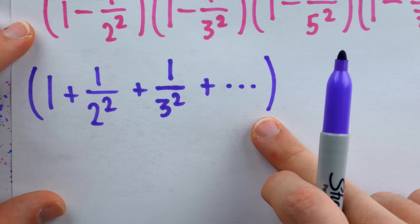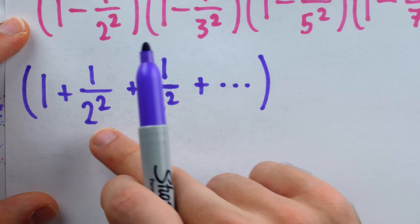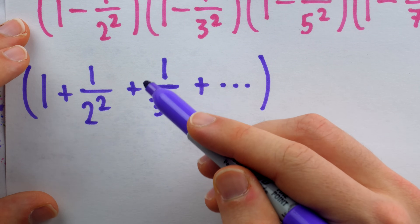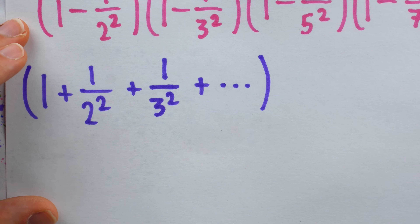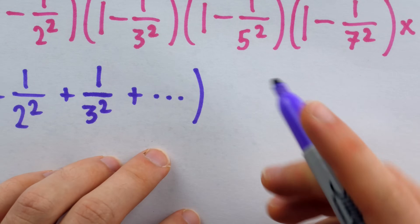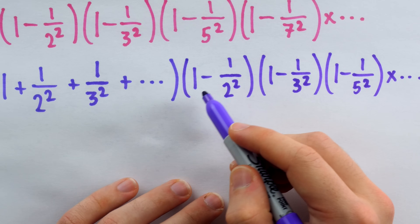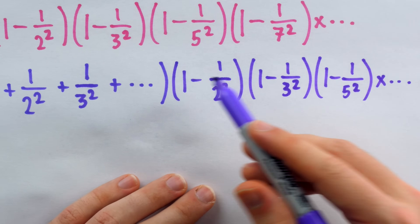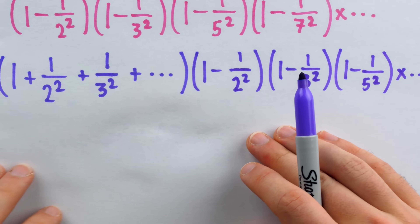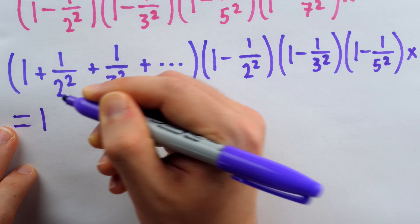This is where we pull a rabbit out of a hat. Consider this series: the sum of reciprocals of squares — 1/1² + 1/2² + 1/3² + 1/4² and so on. Suppose we take this infinite sum and multiply it by the infinite product of (1 - 1/p²) for all prime numbers p. The claim we're going to justify — and which will be the key to our solution — is that this product is equal to 1.